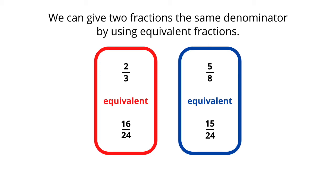Sixteen-twenty-fourths is equivalent to two-thirds. And the denominator, twenty-fourths, is the same as the denominator in fifteen-twenty-fourths, which is equivalent to five-eighths.